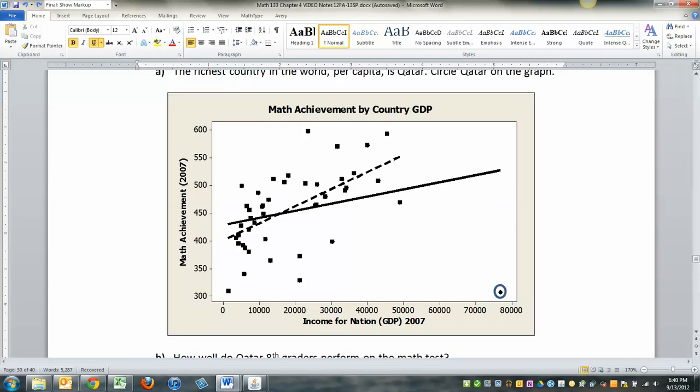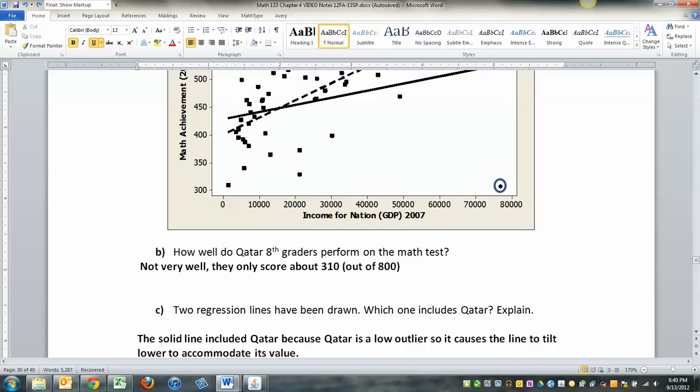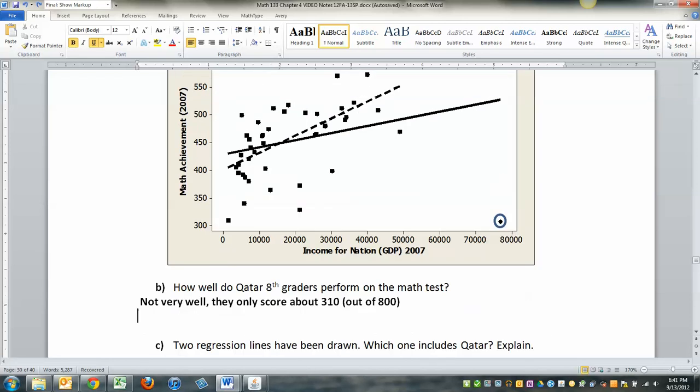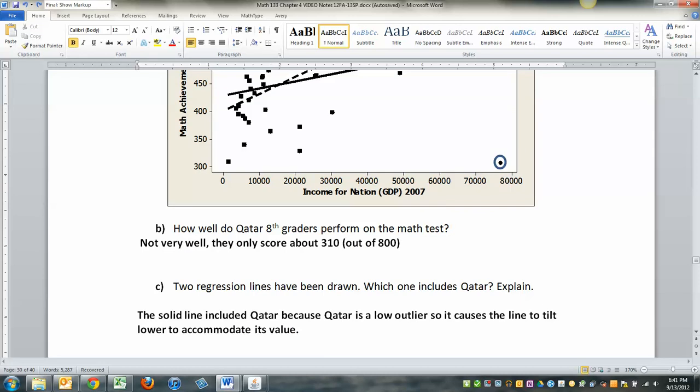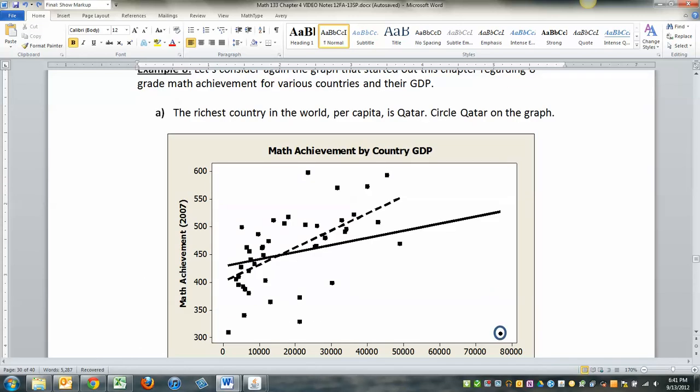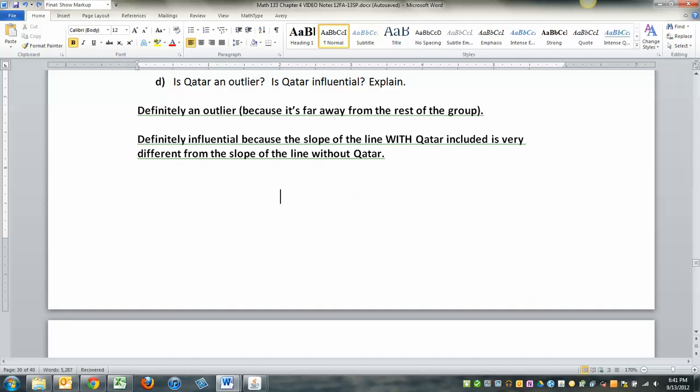All right. So two regression lines have been drawn. There's a dotted one and a solid one. Which one includes Qatar? And the answer is the solid line because Qatar is a low outlier. So including him causes the line to kind of tilt down to accommodate him. Now is Qatar an outlier? Yes. Right. No question about it. Definitely. Qatar is an outlier because it's far away from the rest of the group. Hands down. Is Qatar influential? The answer is yes. Definitely. Qatar is influential because when you look at the slopes, the slope with Qatar, the solid line, right, slope of that line, and the slope without Qatar, that slope of that dotted line, are very different from each other. That means that Qatar was influential. It's having a great effect on the linear regression line.